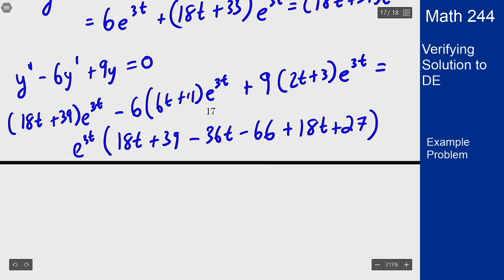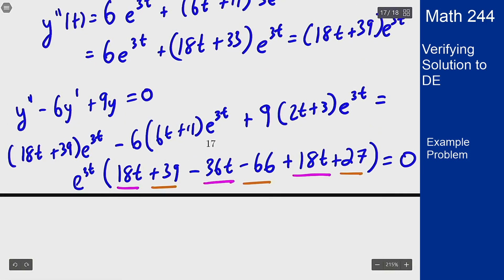And if we look at this, this becomes e^(3t) times: I have 18t + 18t - 36t = 0t. I have 39 + 27 which is 66 minus 66 is 0. So this whole thing goes to 0 because everything cancels out. Therefore, because this worked out and I got to 0, this means that my function solves this differential equation. We have verified that.